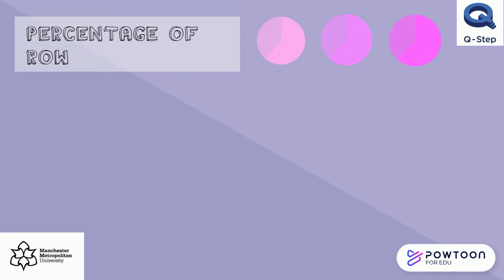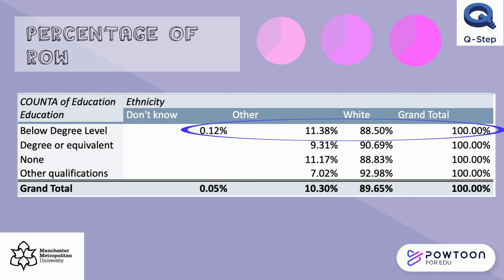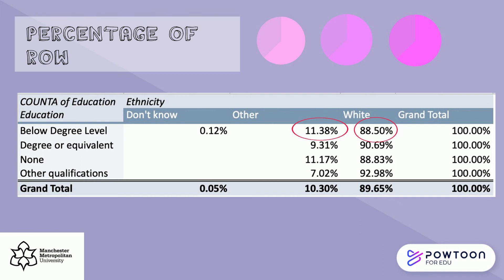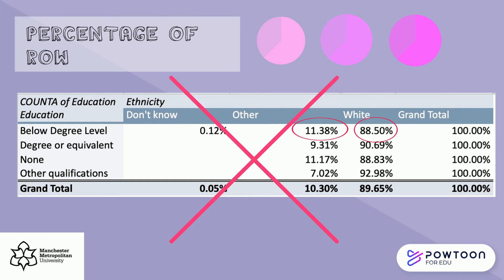Here's another example of a crosstab, but here we are going to be using percentage of row. This is what we do not want to be looking at when performing our own statistical analysis; however, this is an example just to show what it looks like. We are using the same independent and dependent variable as before. However, we can see that there is a large difference in white and other ethnic people's education. Looking on the right, we can see 88.50% of white people and 11.38% of other ethnic people have an education below degree level. However, when looking at the grand total, we can see that this is the total of the dependent variable and not the independent variable. Therefore, this is not telling us the truth about which people actually have an education below degree level in the sample.